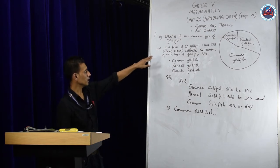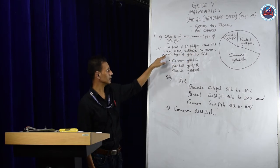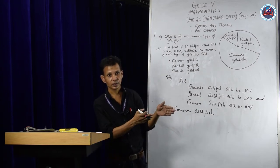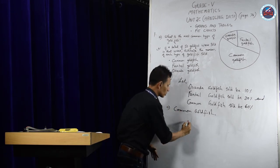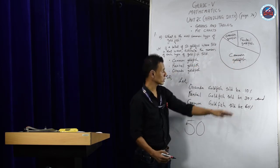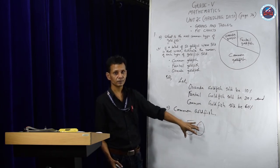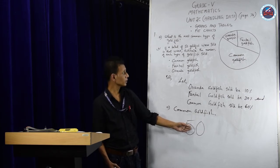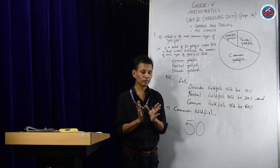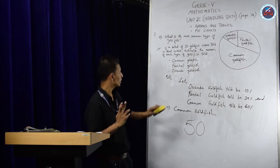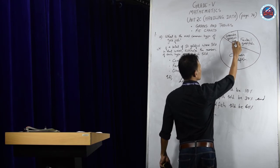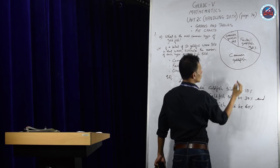Question B says: if the total of 50 goldfish were sold in that week, estimate the number of each type of goldfish sold. So the total number of goldfish sold is 50. That includes oranda, pantel, and common — together only 50 goldfish were sold. We used 10%, 30%, and 60% respectively.